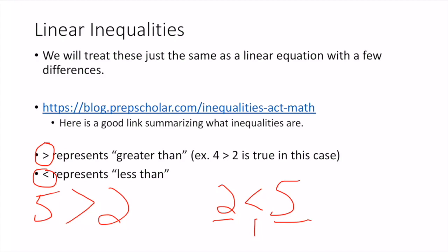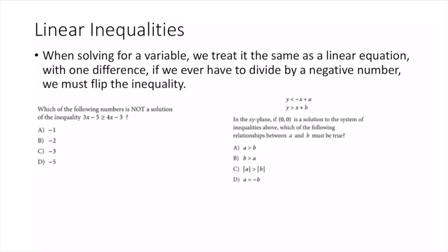These two representations are the same, just with the inequality flipped. When solving for a variable, we treat it the same as a linear equation — with one difference: if we ever have to divide by a negative number, we must flip the inequality. For example, after solving I end up with -2x > 4.